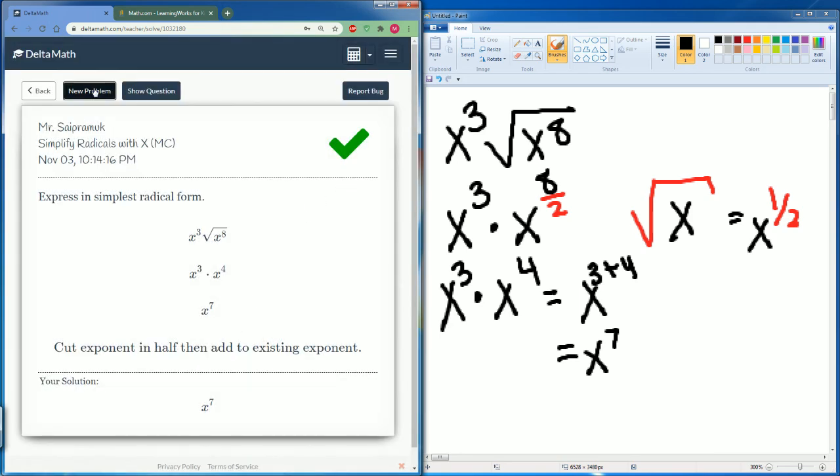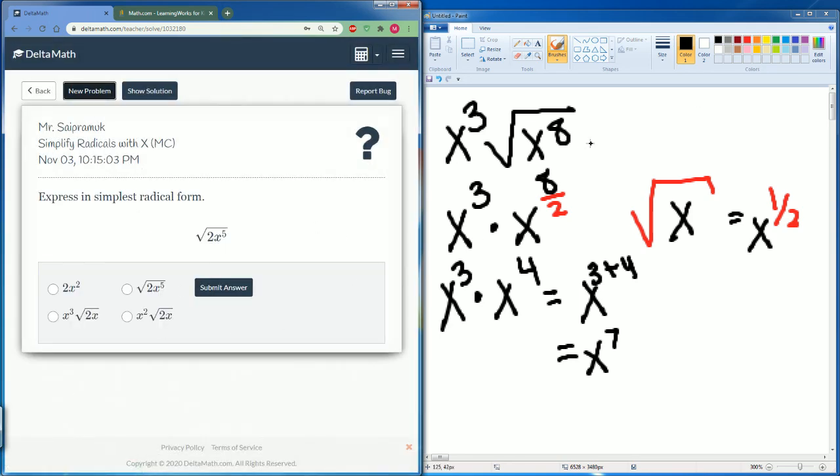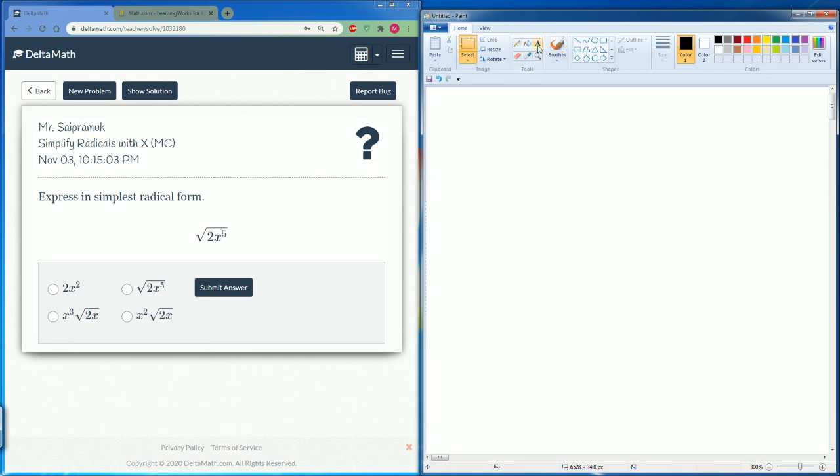Let's do this one more. Here we have radical 2x to the fifth. This can be broken down into 2 times x to the 4 times x.